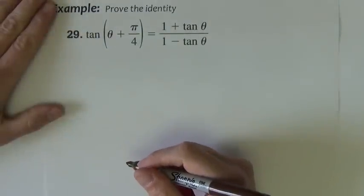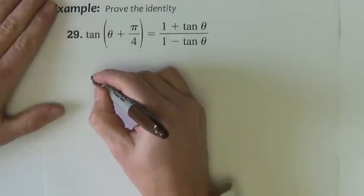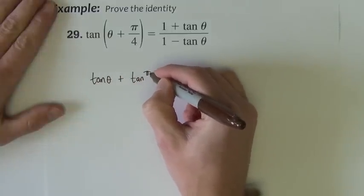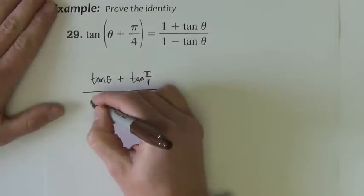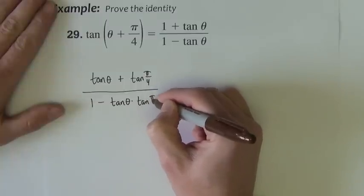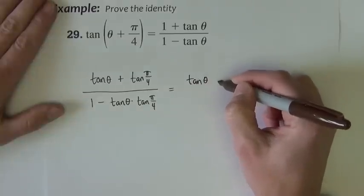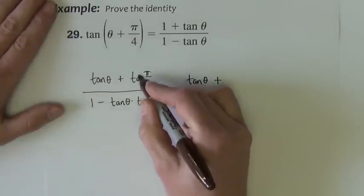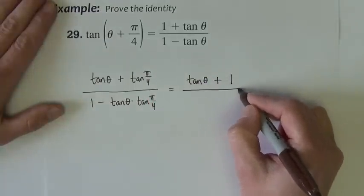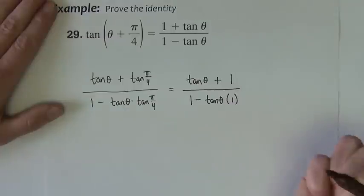Next example, another sum and difference expansion. This one is tangent expansion. So the tangent expansion, we take tangent of the first plus tangent of the second divided by 1 minus tangent of the first times tangent of the second. So we get then tangent θ plus the tangent of π/4. We want the y over x at π/4, which is 1, over 1 minus tangent θ times 1.